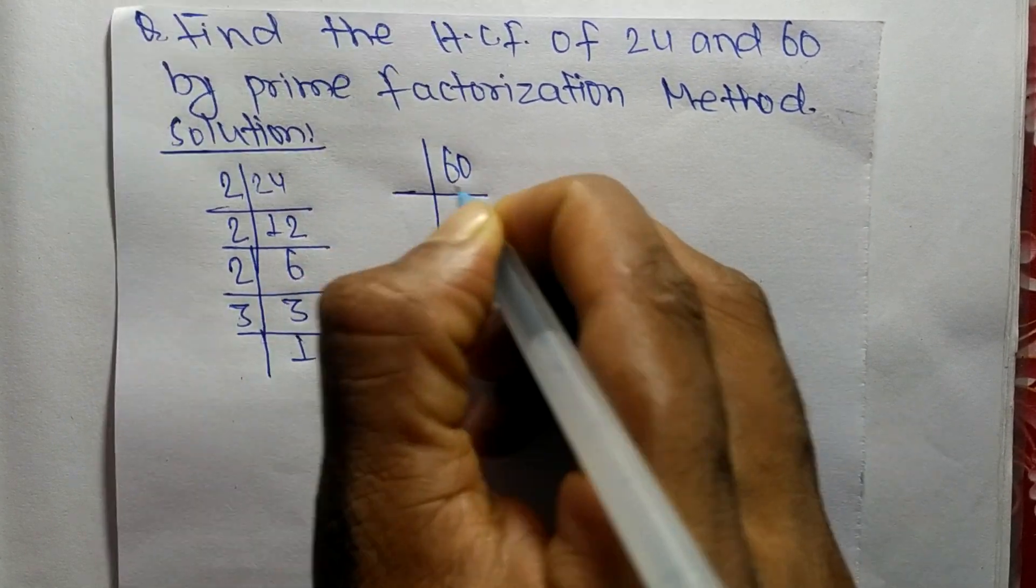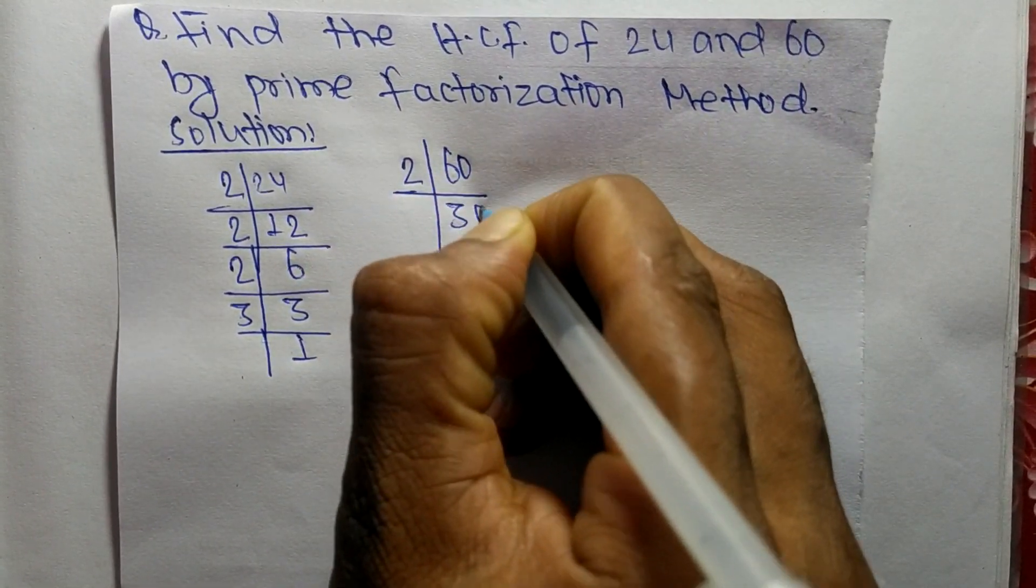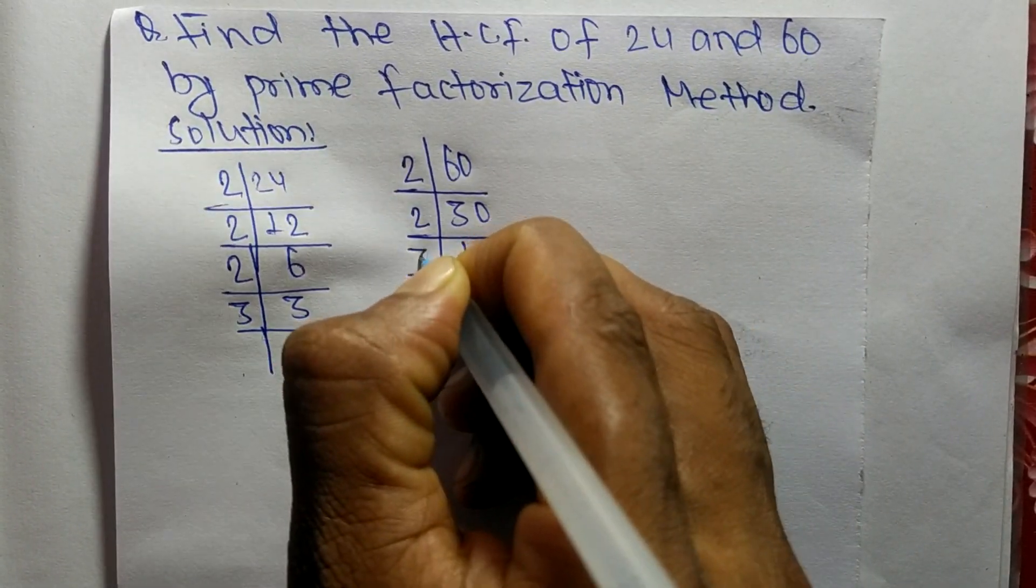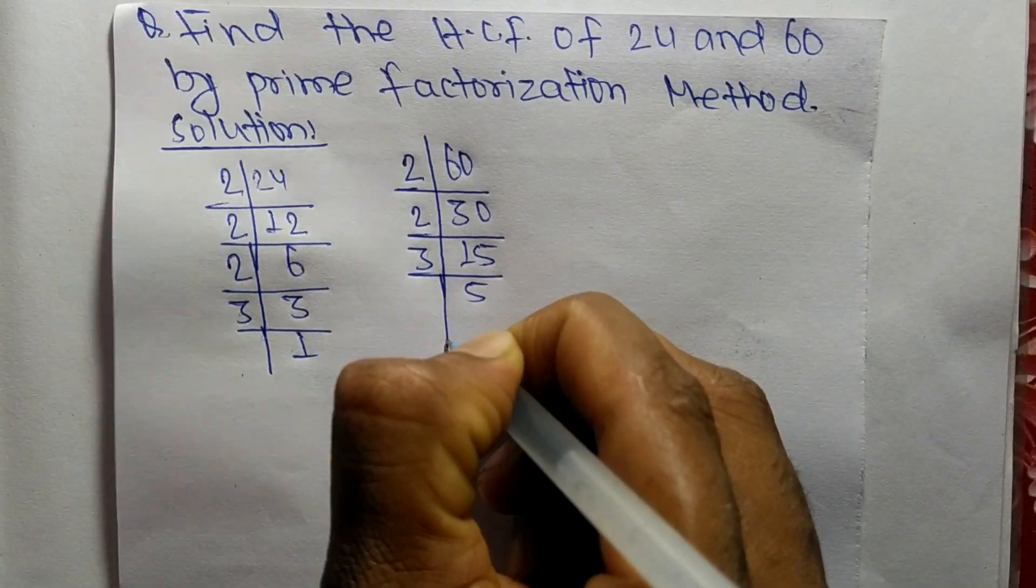The prime factors of 60 are: 2 times 30 equals 60, 2 times 15 equals 30, 3 times 5 equals 15.